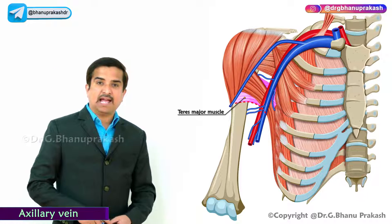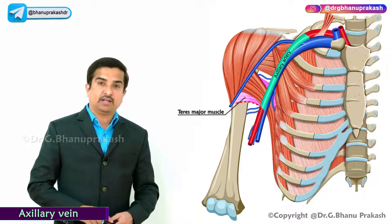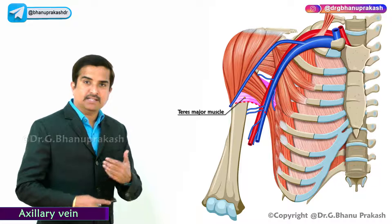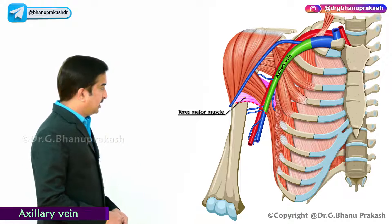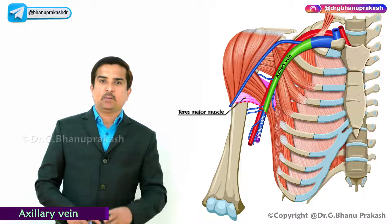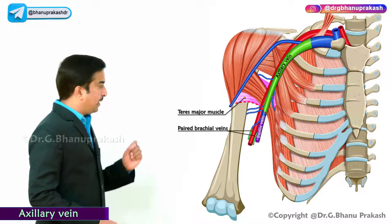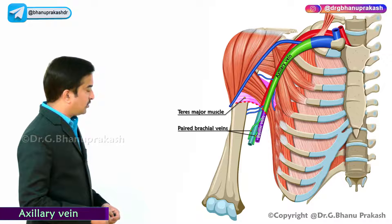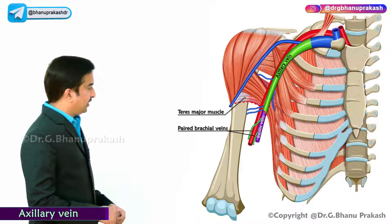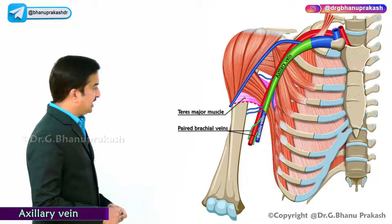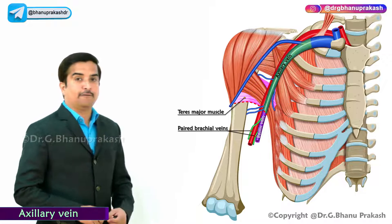Just as the axillary artery terminates at the lower border of the teres major muscle, the axillary vein commences at the same point — by the union of the basilic vein and two paired brachial veins. These two paired brachial veins are the venae comitantes of the brachial artery, and at the lower border of teres major they join with the basilic vein to officially form the axillary vein.